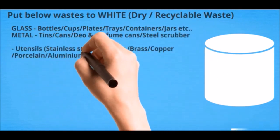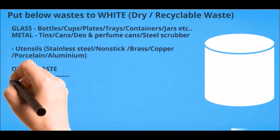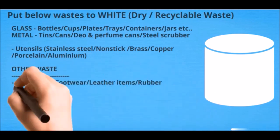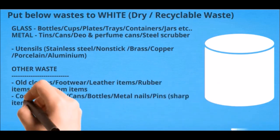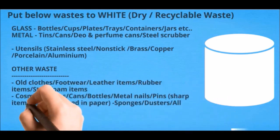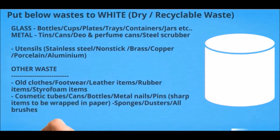Metal: tins, cans, deo and perfume cans, steel scrubber, utensils - stainless steel, non-stick, brass, copper, porcelain, aluminum. Other waste: old clothes, footwear, leather items, rubber items, styrofoam items, cosmetic tubes, cans, bottles, metal nails, pins - sharp items to be wrapped in paper - sponges, dusters, and all brushes.